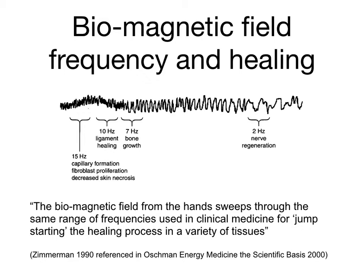Linking that with research by Zimmerman in 1990 provides fascinating correlations. He discovered that the biomagnetic field between the hands is not a single frequency — it actually sweeps through a sequence of frequencies. Each of those frequencies that the biomagnetic field sweeps through relates to healing of different structures in the body. Some of these frequencies are used medically to create instruments that generate electromagnetic fields to accelerate bone growth and other tissue healing.